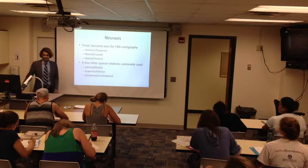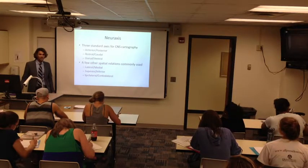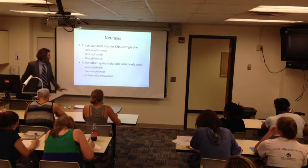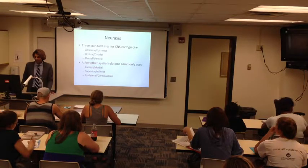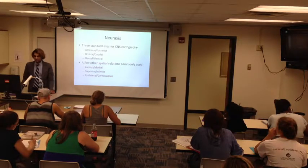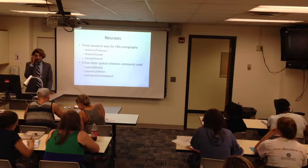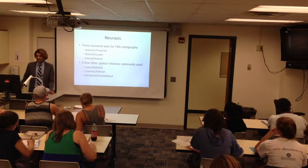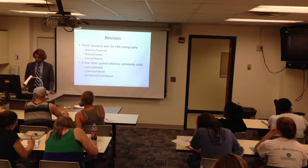We also talk about tracts being ipsilateral or contralateral. Some functions are ipsilateral in certain parts of the nervous system and contralateral in others. The motor tracts all cross the midline at the brainstem, so they become ipsilateral further down, whereas in the brain they're contralateral. The cerebellum is organized contralaterally due to a double-crossing: fibers cross from contralateral to ipsilateral and then back to contralateral.